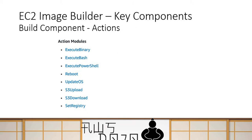When you are building your component, you want to perform several types of actions, and there are certain out-of-box actions you can use. The first three are the most important: execute binary, which runs any kind of executable; execute bash, used primarily on Linux systems for running bash scripts; and execute PowerShell, used on Windows OS images to run PowerShell scripts. You can also reboot your image, update your operating system, and upload or download files from S3. These are the actions you can use in your build component to create the customization you want.